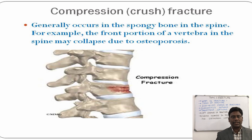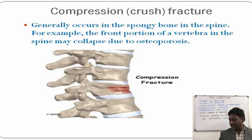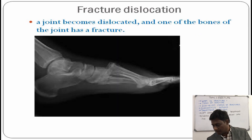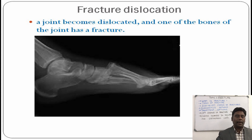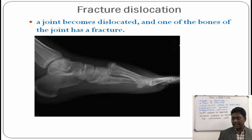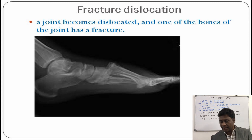In the case of osteoporosis, the bone will collapse, which is called a compression fracture. Fracture dislocation occurs when a fracture dislocates a joint.